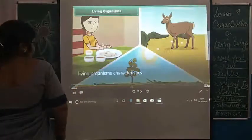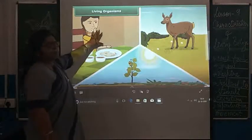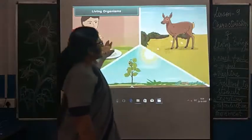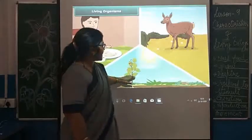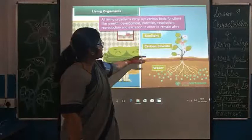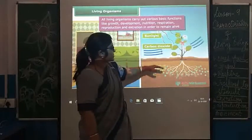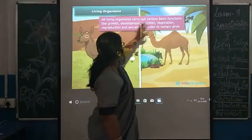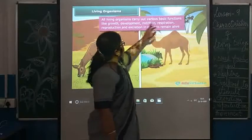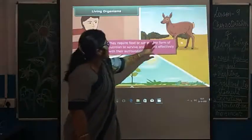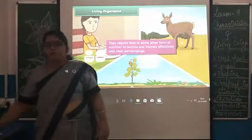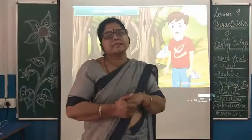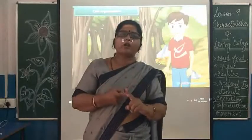Organisms like human beings and animals eat their food because they need it for proper growth. Plants, being autotrophs, can make their own food with the help of sunlight, carbon dioxide, and water. They carry out various life processes like growth, nutrition, and respiration, and for all these life processes we need food. So this is the first characteristic — that yes, all organisms need food.